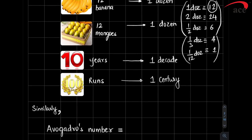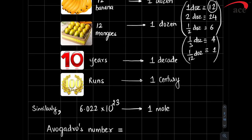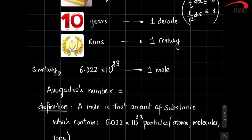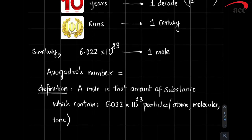Similarly, in science, the person called Avogadro said 6.022×10²³ is nothing but one mole. So just as you say 12 particles is one dozen, in science 6.022×10²³ is known as one mole. That is a huge, very large number, because when you take even a very small amount of a substance, it has a very large number of particles. This number was brought in by a scientist called Avogadro, and in his remembrance it is known as Avogadro's number.